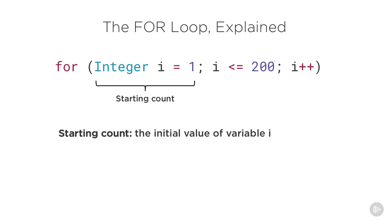You'll often set i to one. This first section is your loop's starting count. In the first iteration of your loop, you'll have access to the i variable, and it will equal one.